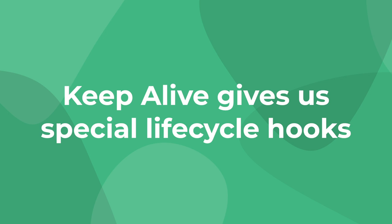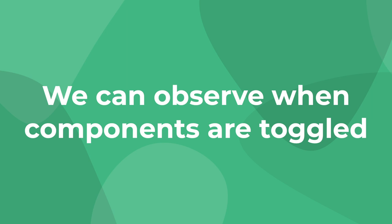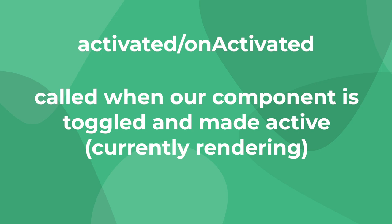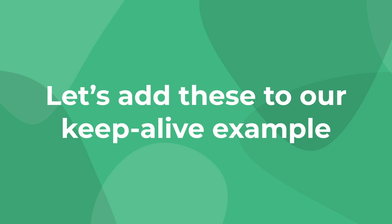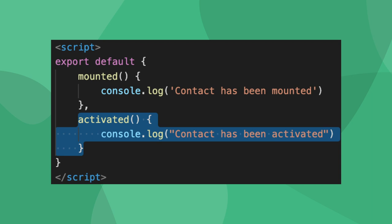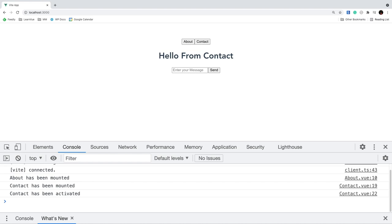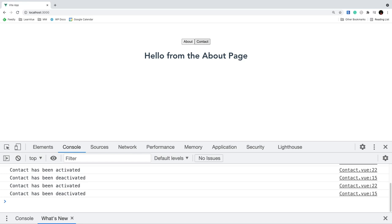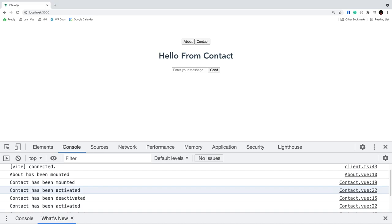One neat thing about Keep Alive components is that they have special Vue lifecycle hooks. Keep Alive components only run their initialization hooks like created and mounted once. To help observe when a Keep Alive component is toggled, we have two unique hooks: activated, called when a Keep Alive component is activated, and deactivated, called when it is deactivated. We can implement these in Vue 2 by adding activated and deactivated to our export default, or import them in the Composition API and use them inside a setup method. If we run the app and switch between tabs, the mounted message is only printed once; after that, the activated and deactivated messages are printed repeatedly whenever we toggle. Note that when a dynamic component is first displayed, it is both mounted and activated.